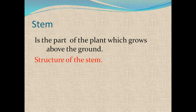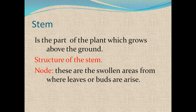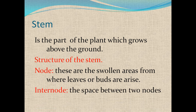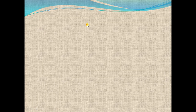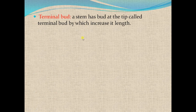The structure of the stem: Node — these are the swollen areas from where the leaves or buds arise. Internode — the space between two nodes is called the internode. In this diagram you can see the nodes, and the space between two nodes is called the internode.